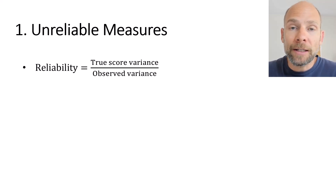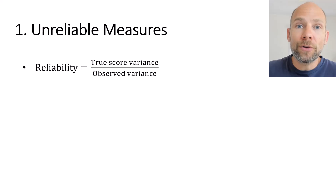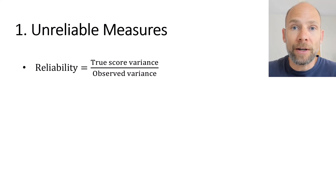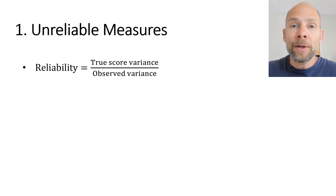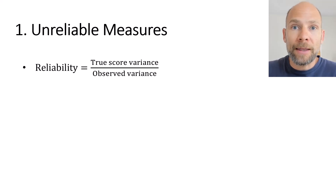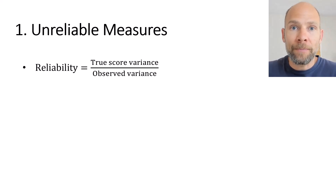Reliability in classical test theory is defined as the proportion of true score variance — variance tau — over total observed variance, where observed variance is the sum of true score variance plus error variance. When your measures are unreliable, you don't have a lot of true score variance, and that can cause the reliability of S to be low through Cronbach's alpha, because S contains a lot of measurement error and not a lot of true score variance.